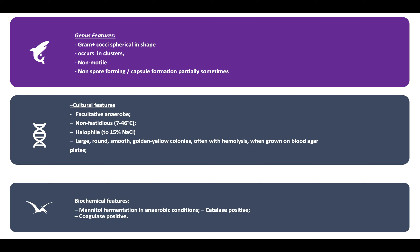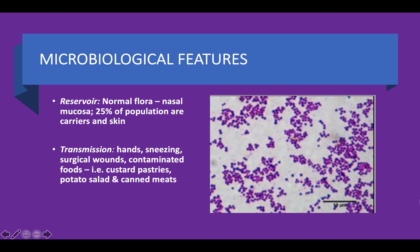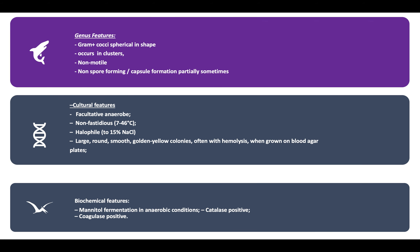A biochemical test can also be performed: you can add mannitol, and Staphylococcus aureus ferments mannitol in anaerobic conditions. They are catalase positive and coagulase positive. The main take-home points are: catalase positive, coagulase positive, gram-positive, grape-like clusters, non-motile, non-spore forming but rarely can form capsules, grow best in anaerobic conditions, and form large round yellow colonies on blood agar.